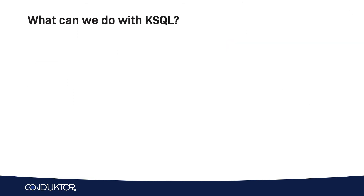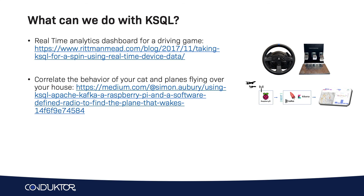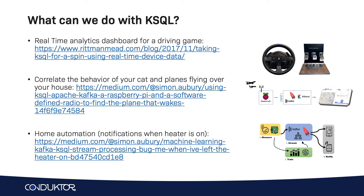So what can we do with ksqlDB? Well, we can do some real-time analytics dashboards for a driving game. We can also correlate the behavior of cats and flying planes over your house — for example, your cat makes a lot of noise when there is a flying plane over your house. This is a cool use case from my friend Simon Aubury. And also home automation — for example, a notification when the heater is on to also get some information around whether or not your house temperature is optimal.